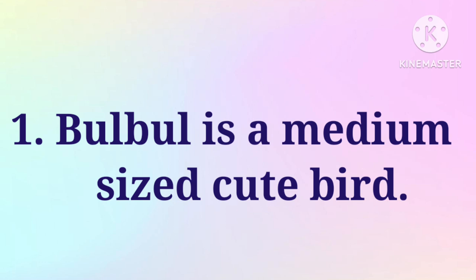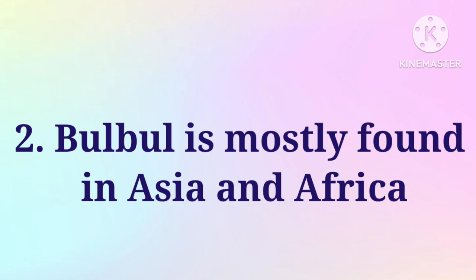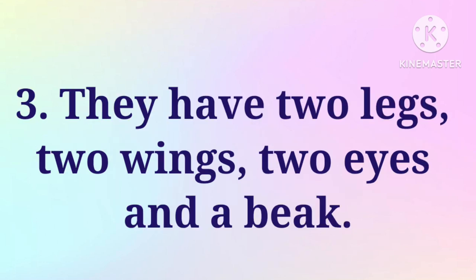Bulbul is a medium-sized cute bird. Bulbul is mostly found in Asia and Africa. They have two legs, two wings, two eyes and a beak.